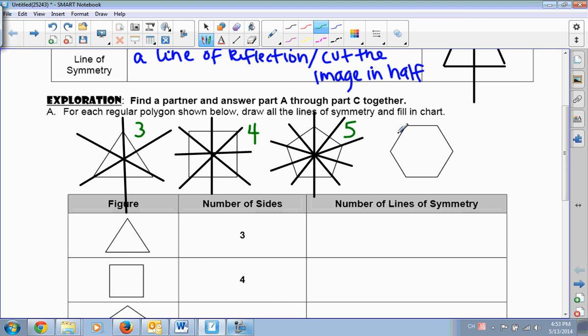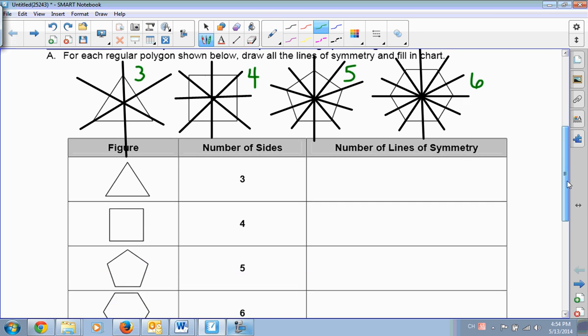One, two, three, four, five, and six. So this has six lines of symmetry. Okay, so let's fill in the chart now.